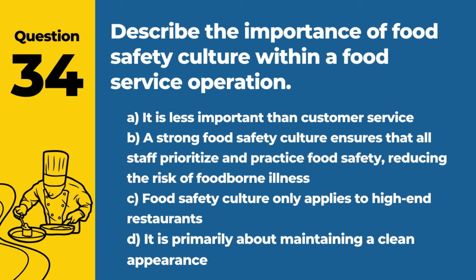Question 79. How can a food service operation ensure the effectiveness of a food recall? Answer: B. Regularly training staff on recall procedures and maintaining accurate inventory records for quick response. Effective recall procedures protect customers by swiftly removing potentially unsafe food from the supply chain.